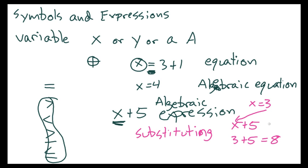That expression would equal 8. Now here's a case where x is right next to a number — for example, 2x — and that just means multiplication. So 2x really means 2 times x. In algebra you typically won't see the multiplication symbol written as × because that could be mistaken as a variable.